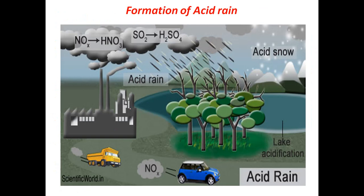This is how acid rain is formed. Oxides of nitrogen — called NOₓ — are released from vehicles and chemicals. When nitrogen monoxide is released, it reacts with oxygen to form nitrogen dioxide. This nitrogen dioxide then reacts with water and forms nitric acid and nitrous acid, which later comes down in the form of acid rain.